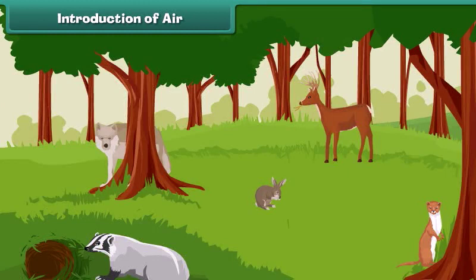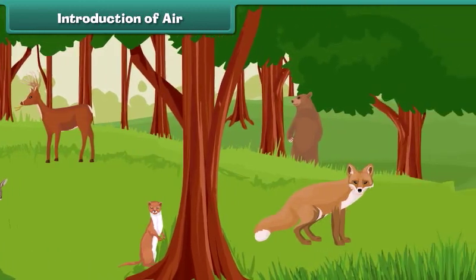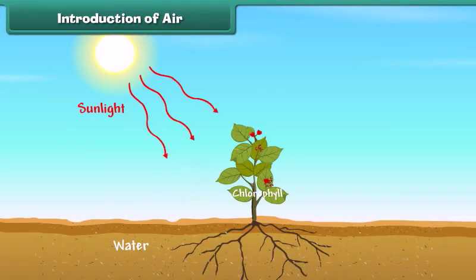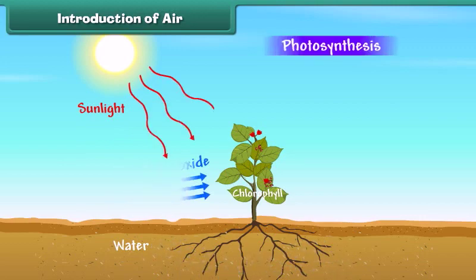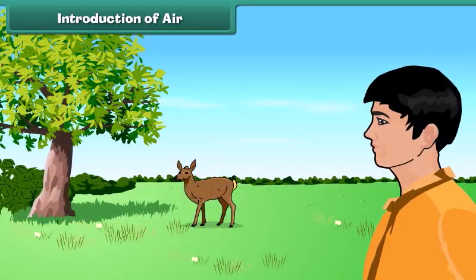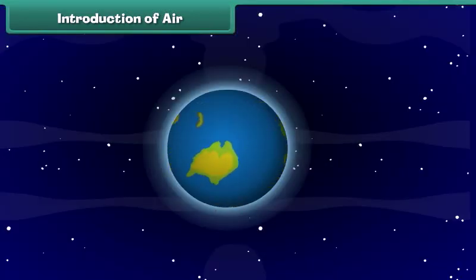Air is very important for almost all life on earth including plants and animals. Plants need carbon dioxide from air to do photosynthesis and release oxygen into the air. Human beings and animals need to breathe air to get the oxygen they need to survive. Do you know the atmosphere surrounding earth is full of air?